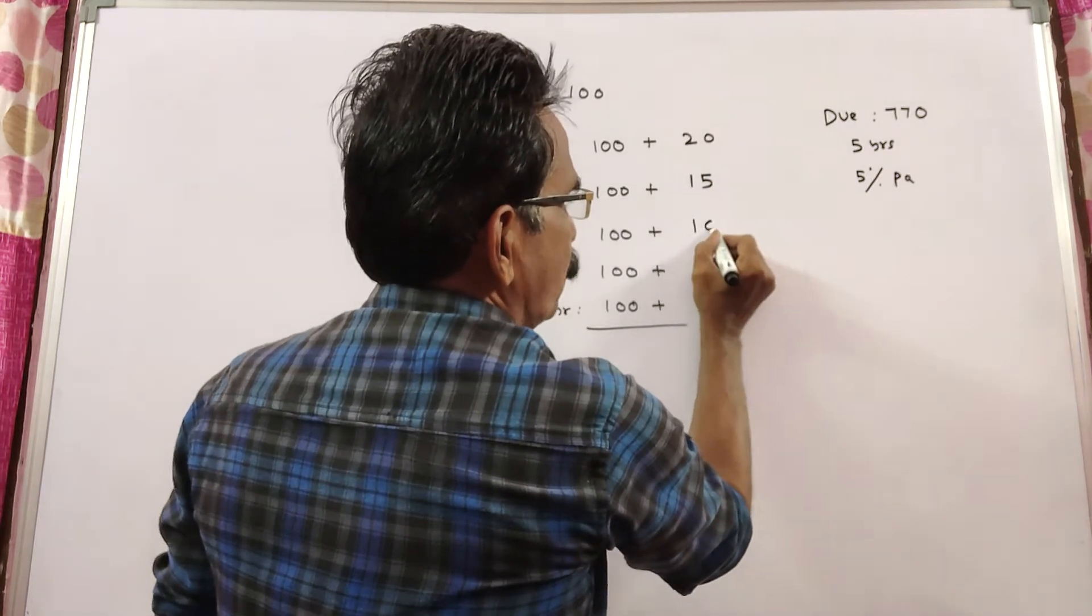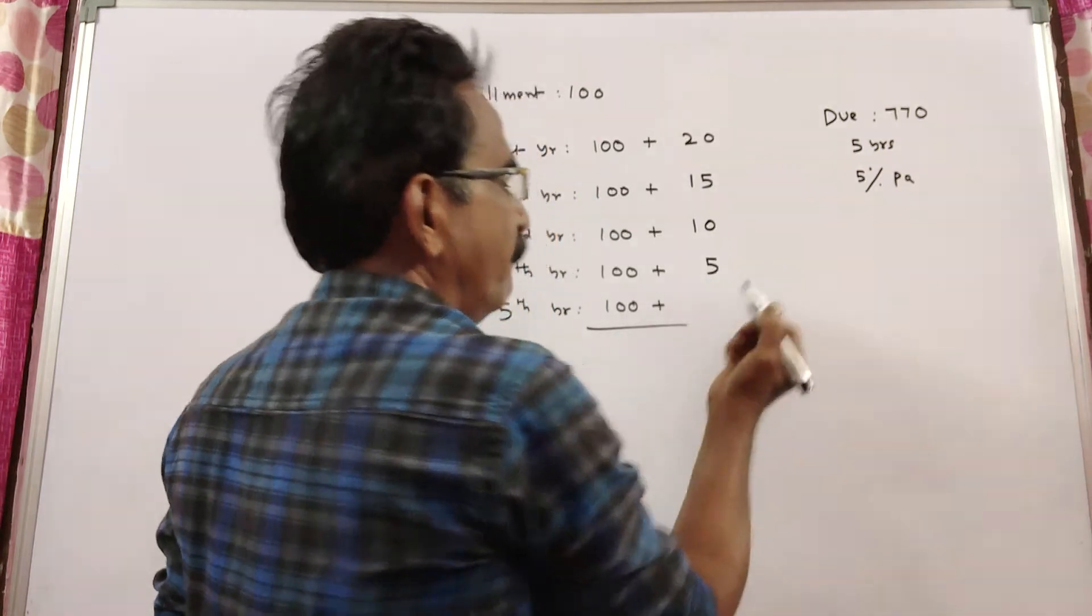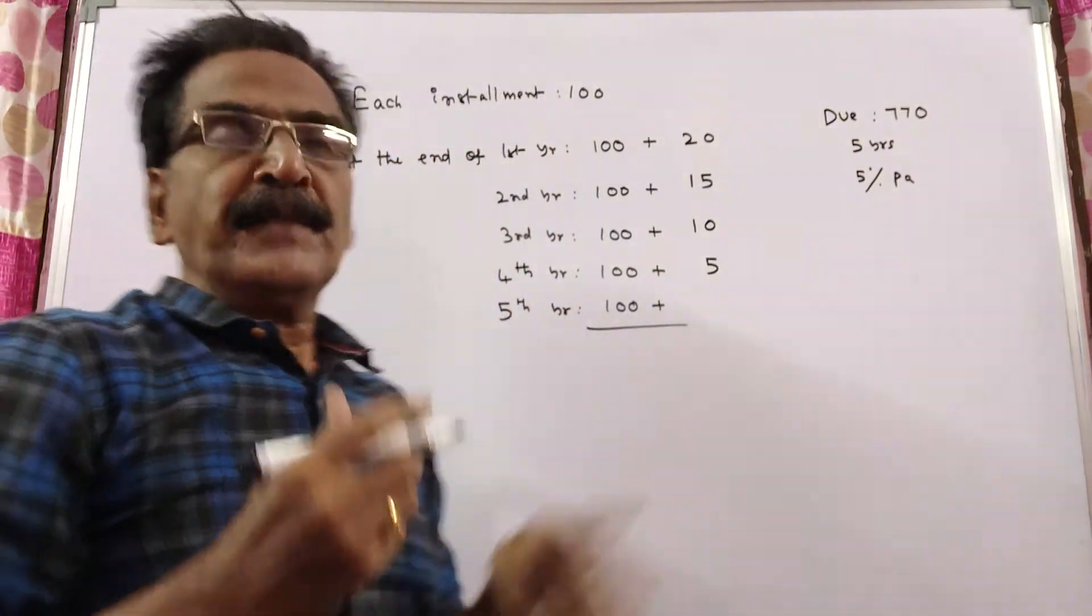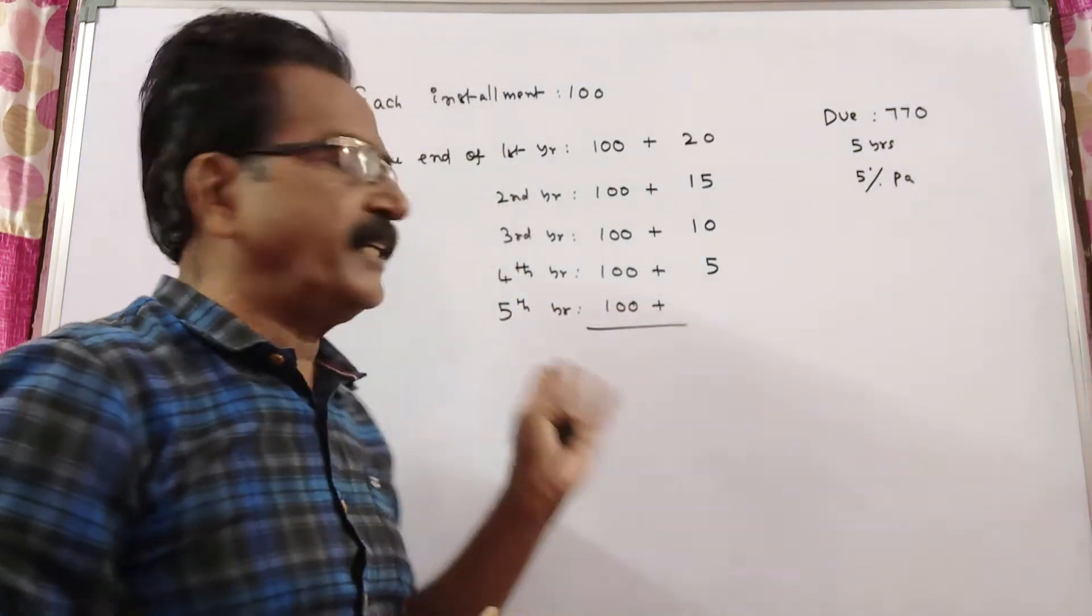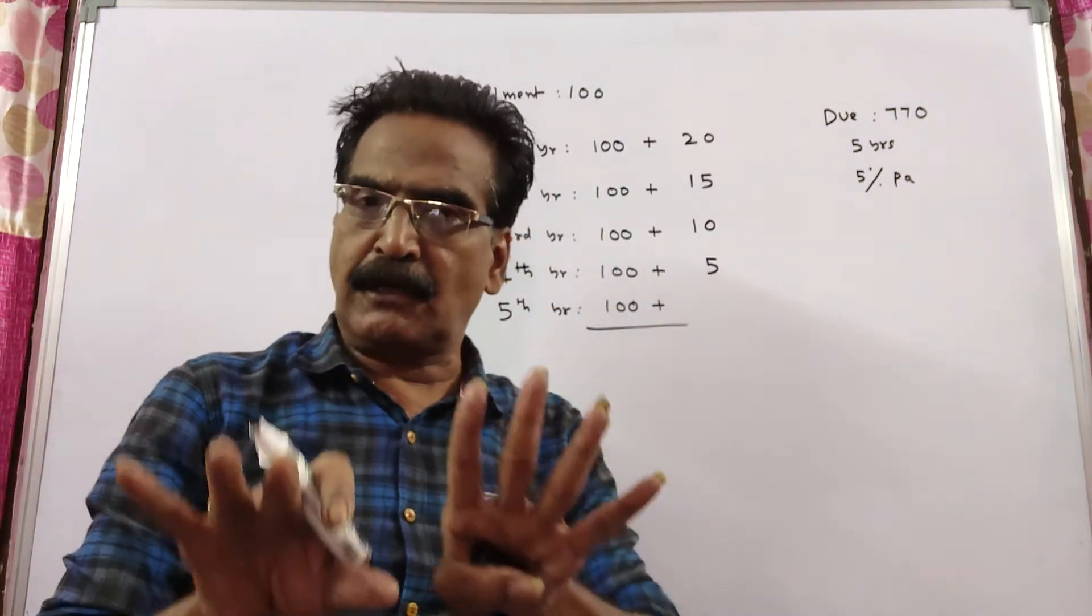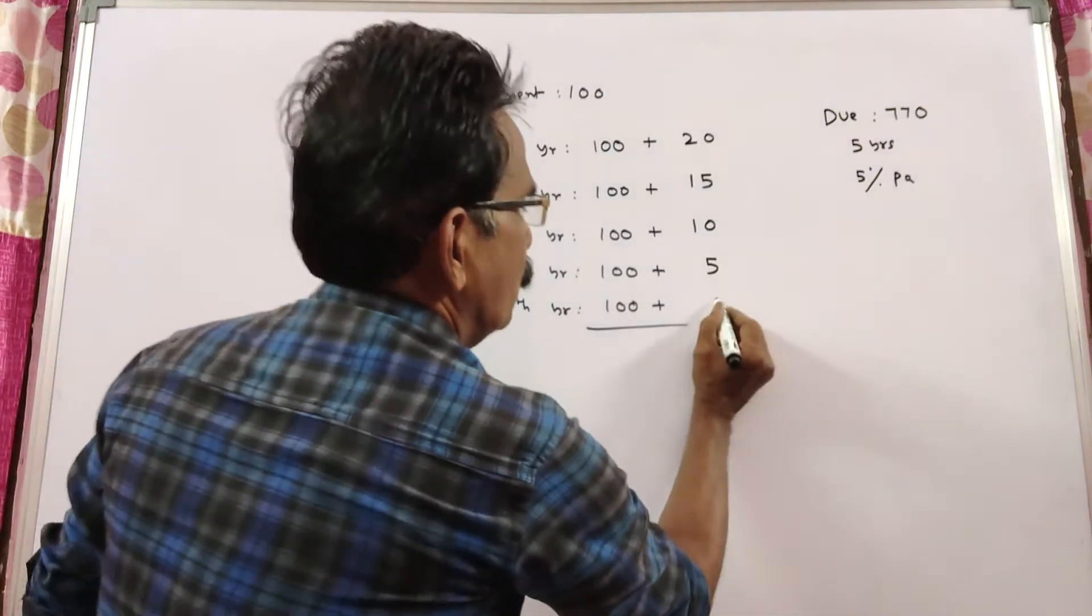In the same way, 2 years, 2 P-Y-s, 10. 1 year, 1 P-Y-s, 5. The installment you pay at the end of the 5th year will fetch no interest because the period is over. So that is 0.